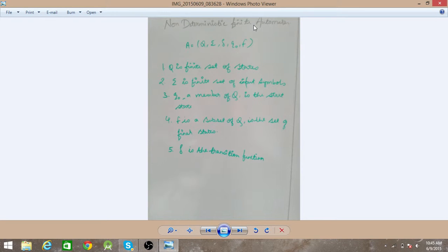And let's look at the definition of non-deterministic finite automata. So it has Q which is the finite set of states. Next, it has input symbol. So it takes input, which is a set of input.